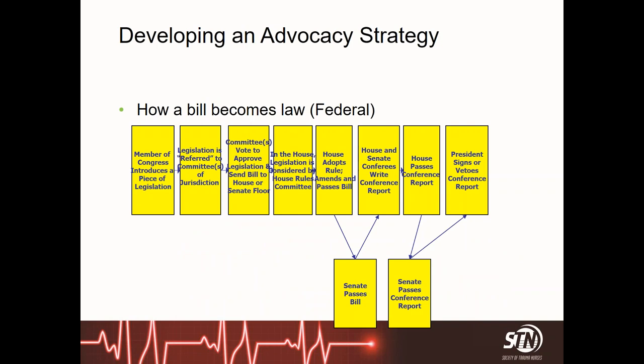This is the process of how a bill becomes law, using the federal level as the primary example — most states follow a similar flow. A member introduces a piece of legislation, something they care about or a group has brought to them. That legislation is referred to the committee of jurisdiction. The committee votes on the legislation and sends the bill to the House or Senate floor. In the House, the legislation is considered by the Rules Committee, and if it adopts the rule, it amends and passes the bill. The House and Senate then have to agree on their two bills. If there are differences, they write a conference report that combines both parts into one piece.